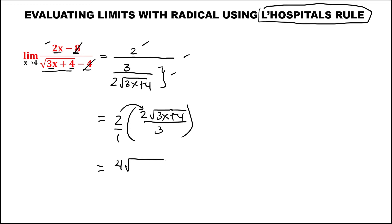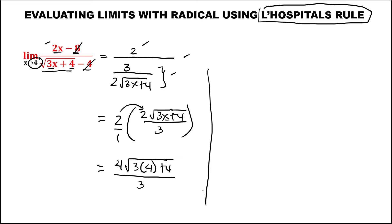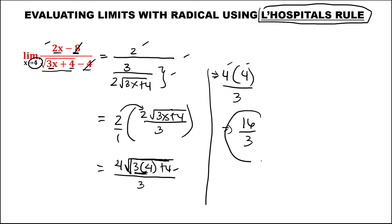Simplifying, this becomes 2 times √(3x+4) over 3. Now substitute the value of x — that's 4 — so we get 2 times √(3×4+4) over 3. That's 2 times √(12+4) = 2 times √16 = 2 times 4 = 8... wait, 4 times 4 is 16. Over 3. So the limit is equal to 16 over 3.